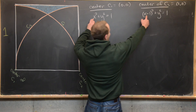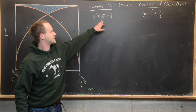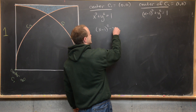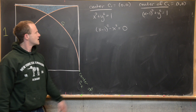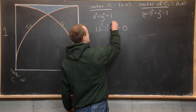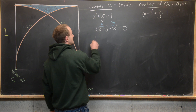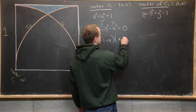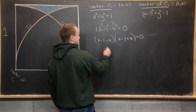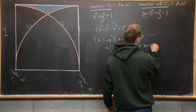We'll subtract the two equations. The y² terms cancel and the ones cancel, leaving (x − 1)² − x² = 0. That's a difference of squares: writing a = (x − 1) and b = x, we get (a − b)(a + b) = 0, which becomes (−1)(2x − 1) = 0. This very quickly tells us that x = 1/2.